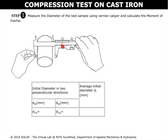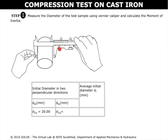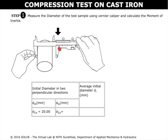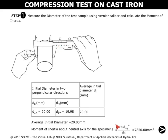Click on the vernier scale to measure the diameter of the specimen in two perpendicular directions. Click once again to measure the diameter in one more direction. The average diameter is then found, and the moment of inertia about the neutral axis of the specimen is also calculated using this formula.